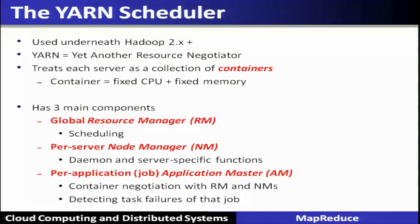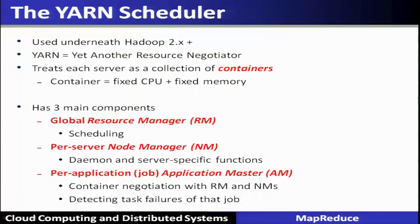The YARN scheduler, used from Hadoop 2.0 onwards — YARN stands for Yet Another Resource Negotiator — treats each server as a collection of containers. For example, a server with 3 cores and 3 GB memory provides 3 containers (1 core + 1 GB = 1 container), so 3 different tasks can be assigned. YARN has three components: the global Resource Manager performs scheduling of map and reduce tasks to containers; the Node Manager is a daemon on every server managing server-related functions; and per-application there is an Application Master that negotiates with the Resource Manager and Node Manager for task allocation.